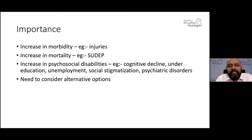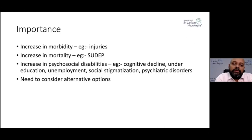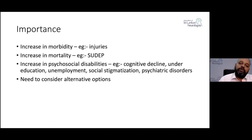These patients also face restrictions in education, may be unemployed, experience social stigmatization, and may have psychiatric comorbidities such as anxiety and depression. Based on these aspects, it's important to identify pharmacoresistant epilepsy early and consider alternative treatment options beyond antiepileptic drugs for this special cohort of patients.